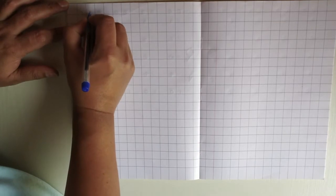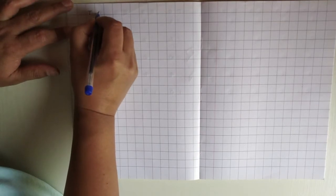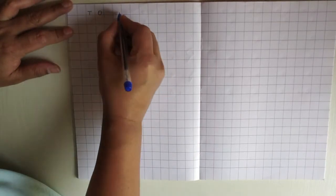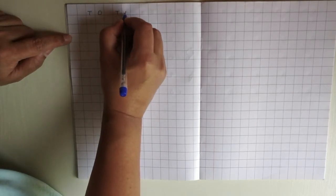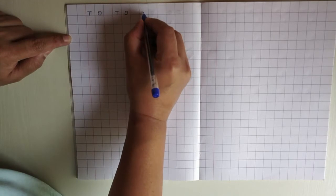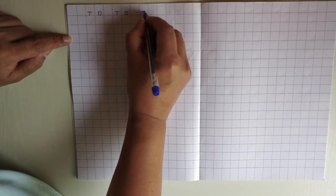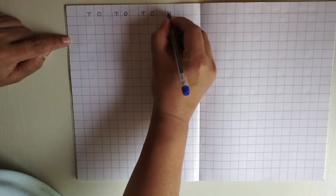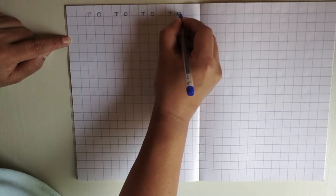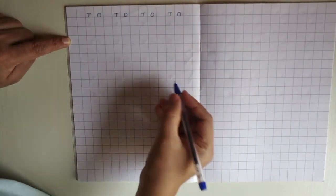Now we are going to write T O. T stands for tens. O stands for ones. Shall we start writing children?